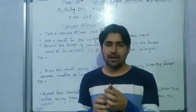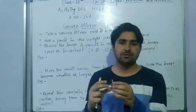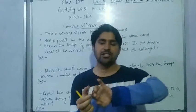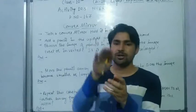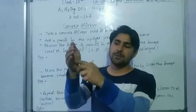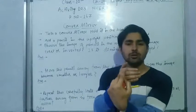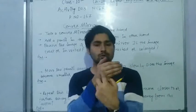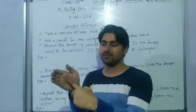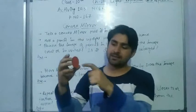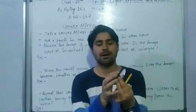A convex mirror has the polish — from which reflection takes place — on its inner curved side. The outer side is not the reflecting surface; the inner curved side is polished and that is where reflection takes place.